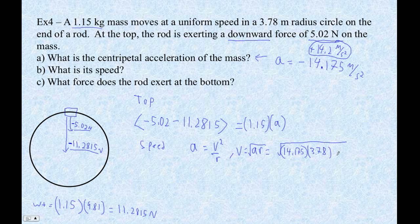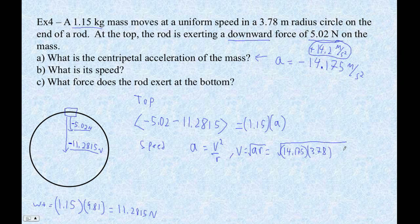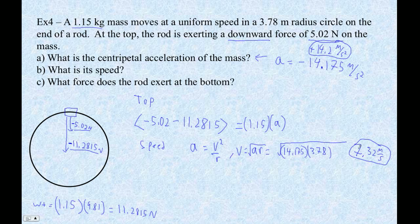Taking the square root of that, I'm getting 7.31999, so the velocity is 7.32 meters per second — we only have three sig figs. Ta-da! That's our tangential velocity, 7.32.